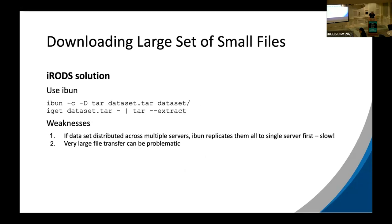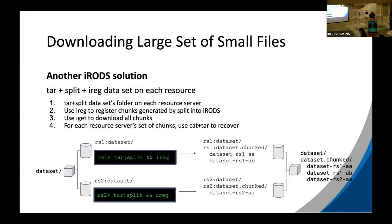iRODS has similar solutions. Similar to the tar pipe, you can use iBun: it takes your data on the server, creates a single file from it, then you can use iGet to download it and pipe through tar. The weakness is that if data is distributed across multiple servers, iBun replicates the data to a single server first, which can be slow, and it still has the very large file transfer problem. Another solution similar to tar+split is to run tar+split on each resource server, use iReg to register the chunks into iRODS, then use iGet to download all the chunks and put everything back together on the client side.